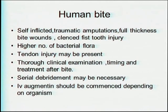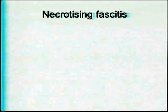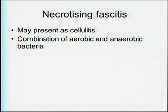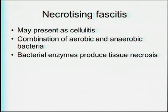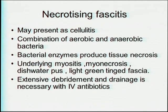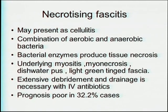IV co-amoxiclav should be commenced depending on the causative organism. Necrotizing fasciitis is another serious infection — it can present as cellulitis and is caused by a combination of aerobic and anaerobic bacteria. Bacterial enzymes produce tissue necrosis with an underlying myositis that spreads rapidly through tissue planes. There is myonecrosis, dishwater pus, and light green-tinged fascia — very characteristic of this infection. Extensive debridement and drainage with IV antibiotics are necessary. Even in the best centers, the prognosis is poor, with a mortality of 32.2%.